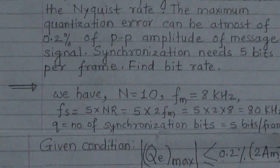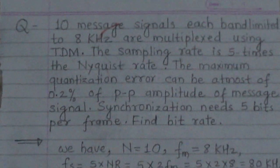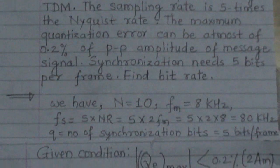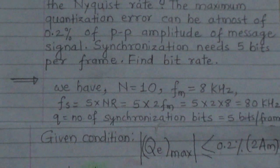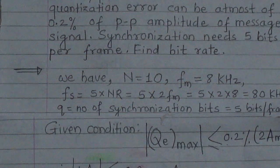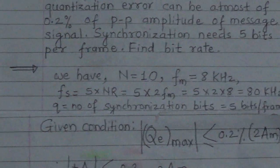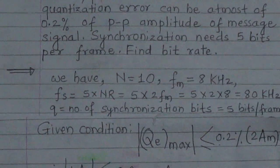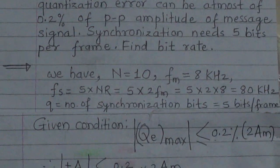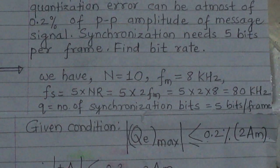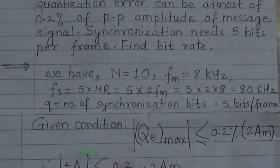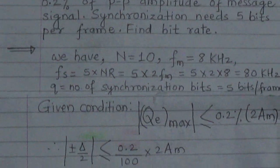In this numerical, we have n = 10, fm = 8 kHz. So fs = 5 × Nyquist rate. The Nyquist rate is 2fm, so fs = 5 × 2 × 8 = 80 kHz. The variable q indicates the number of synchronization bits, which equals 5 bits per frame.